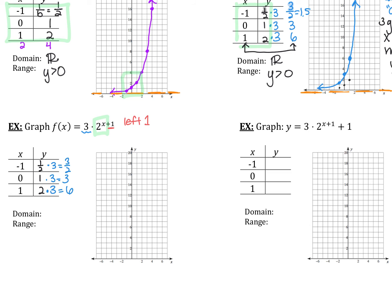I still plot those points: negative 1 gives 3/2, 0 gives 3, 1 gives 6 — the same three points as the graph above. But now I take each of those plotted points and shift them left 1. Shifting left 1 does not impact the horizontal asymptote since I didn't shift up or down. So domain and range are still all reals and y is greater than 0, or 0 to infinity.